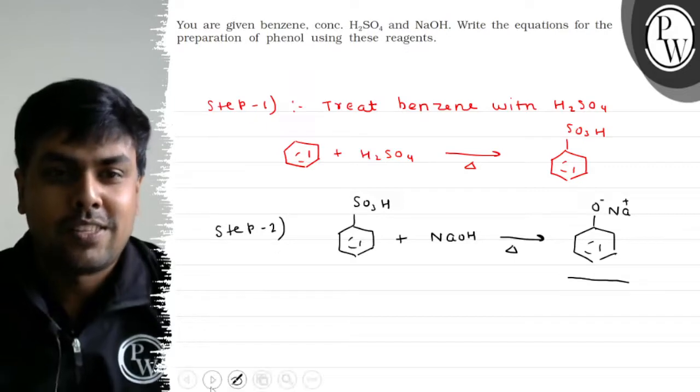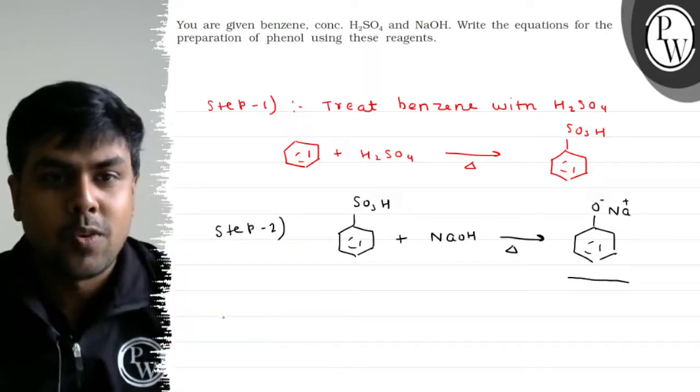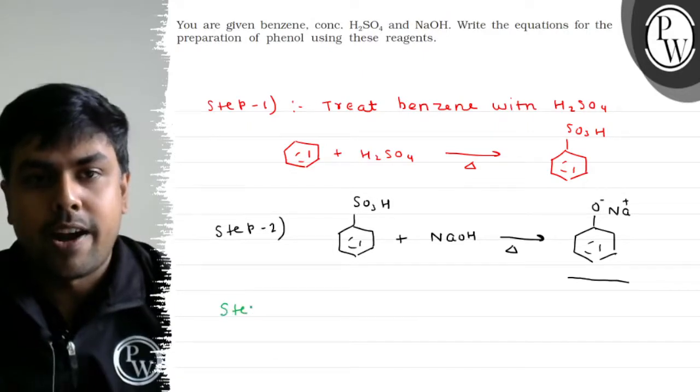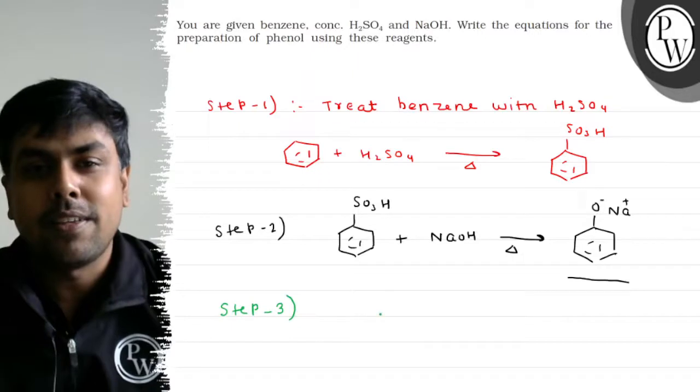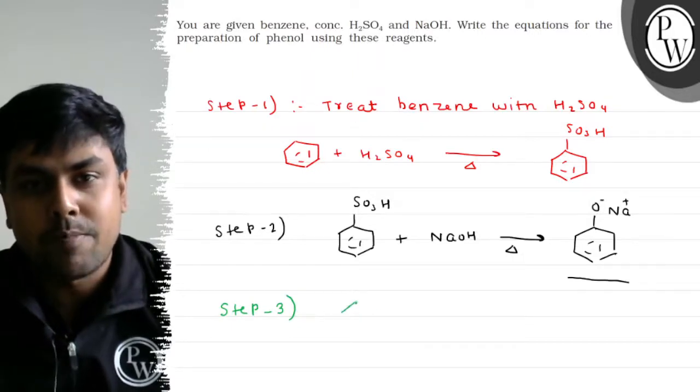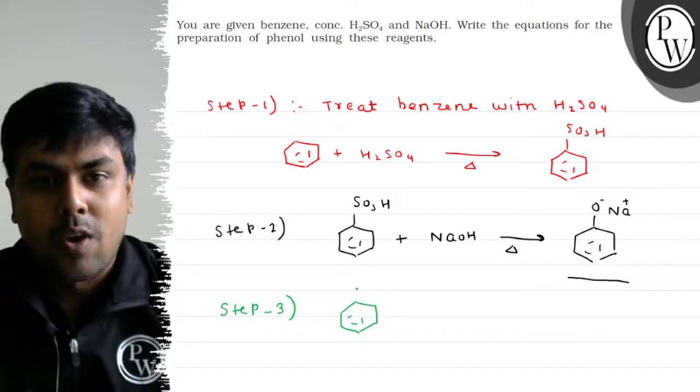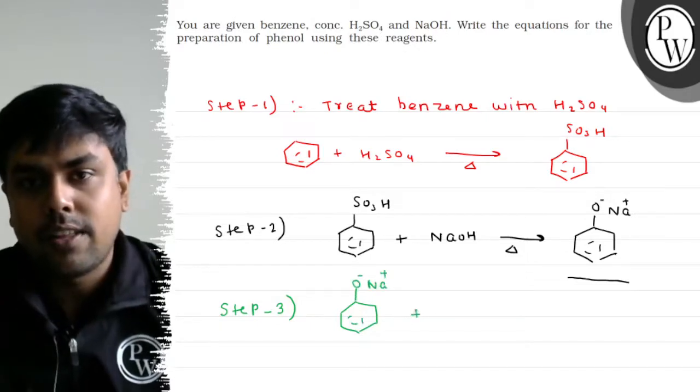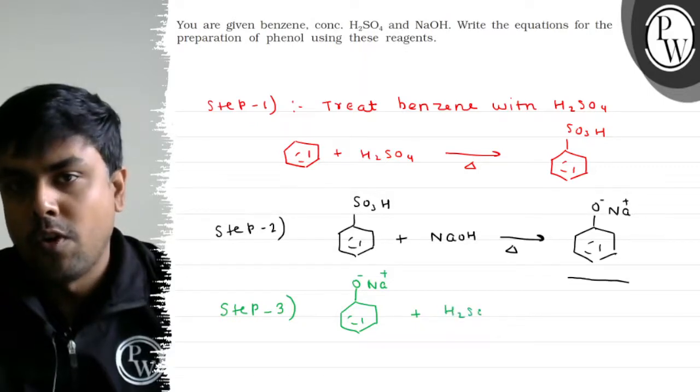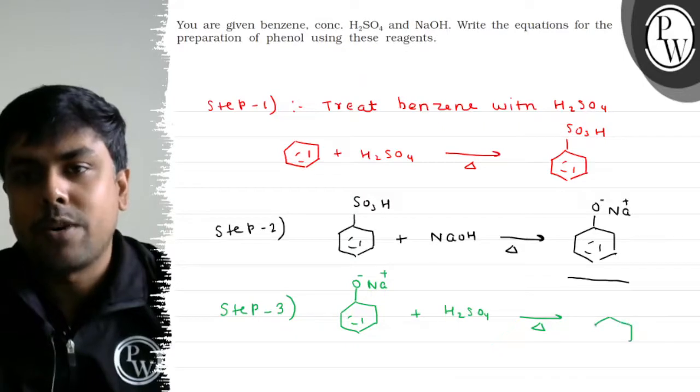Now step 3: I have phenoxide ion, which is just an H plus away from phenol. I will treat phenoxide ion with H2SO4 to get our desired product.